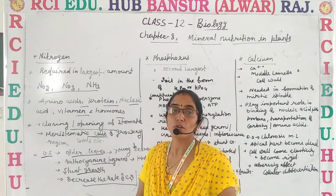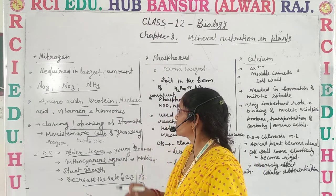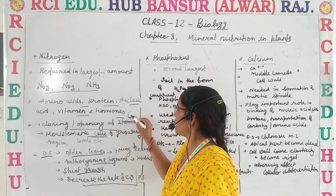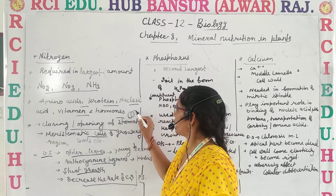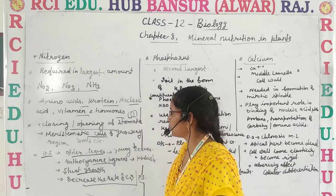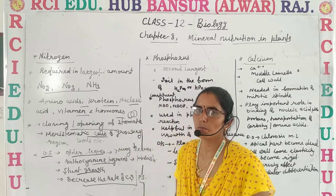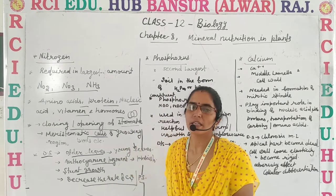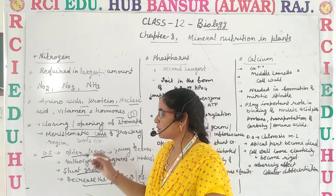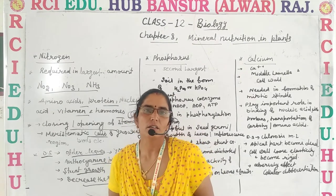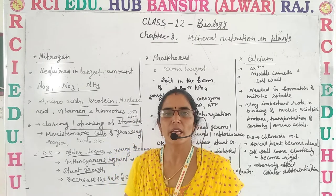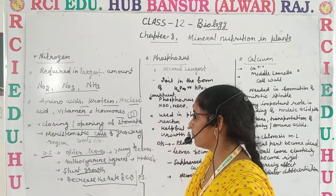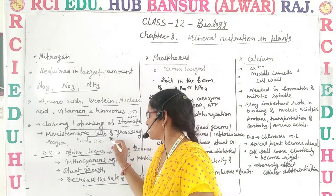Nitrogen also plays a vital role in the closing and opening of the stomata. As we know, closing and opening of stomata is essential for the exchange of gases and for the transport of water and other purposes. So, closing and opening of stomata is also controlled by nitrogen. It is also required by the cells of meristematic regions, which are essential for the growth of buds and other growing regions.